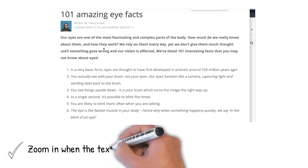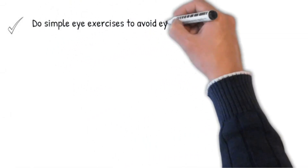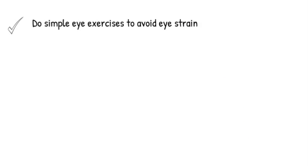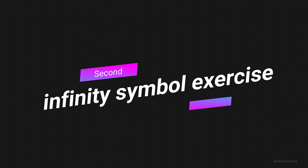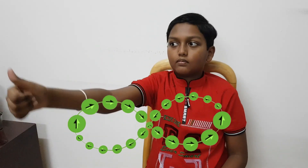Rules of digital eye safety: zoom in when the text is a bit too small. Don't forget to blink your eyes frequently to prevent dry eyes. Do simple eye exercises to avoid eye strain. The first is the palming exercise — rub your hands for 10 seconds and cover your eyes with your palms. The second is the infinity symbol exercise — extend your arm, focus on your thumb, and move your thumb repeatedly in the pattern of the infinity symbol for 3 counts.